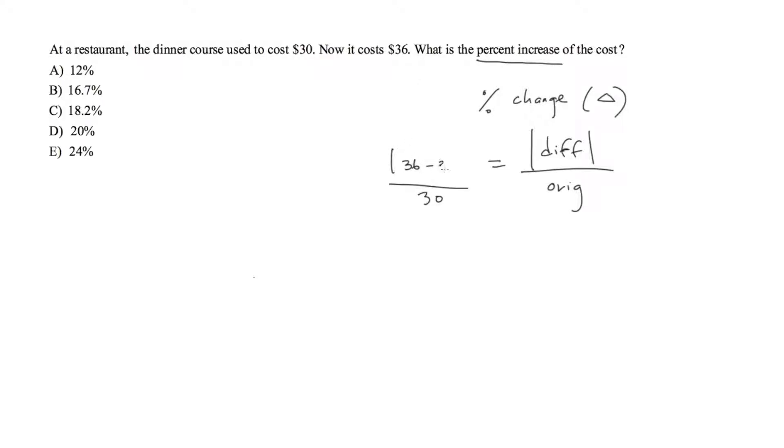36 minus 30, so this equals 6 divided by 30, which equals 0.2. In order to make it a percentage, we multiply times 100 and we get 20 percent. In a separate question, if it says that a dinner costs $36 and